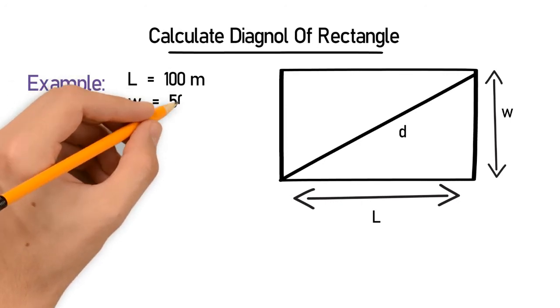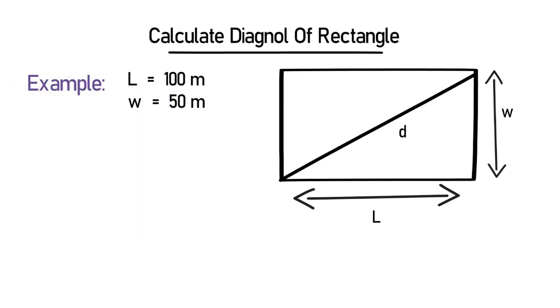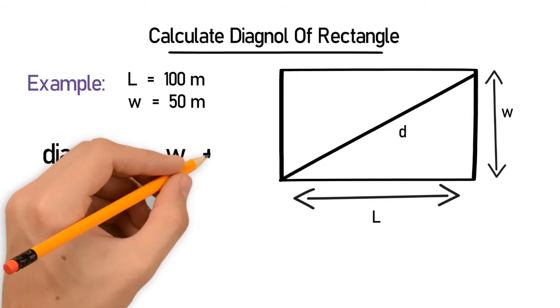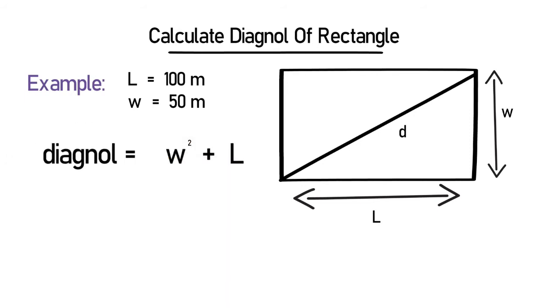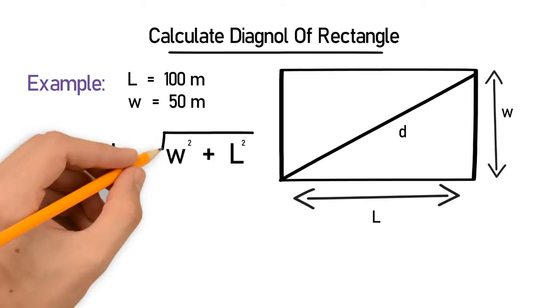So the formula to calculate the diagonal of a rectangle is w² + L² under the root, where w is the width and L is the length of the rectangle.